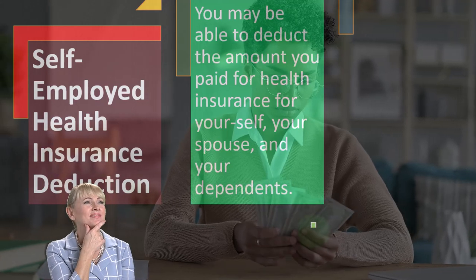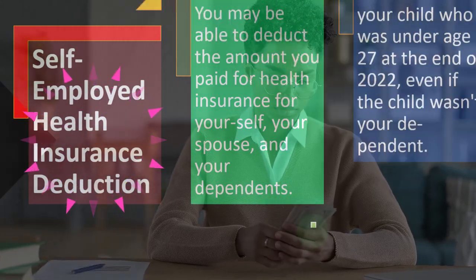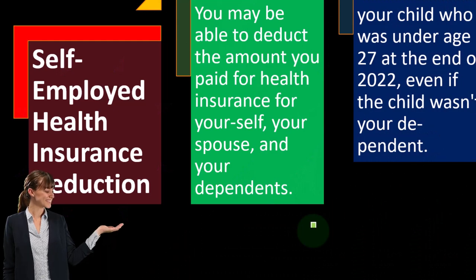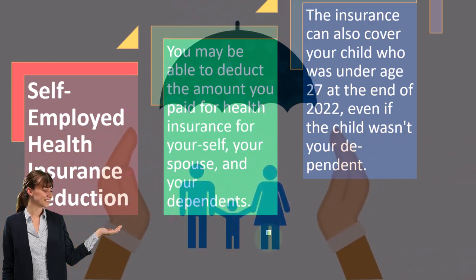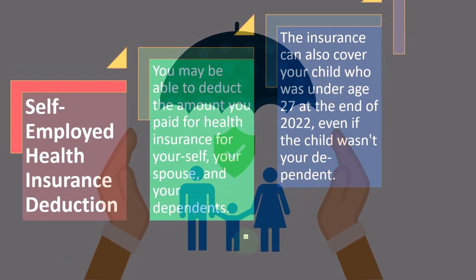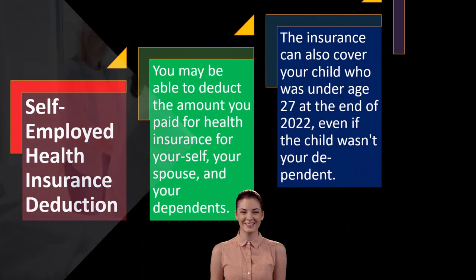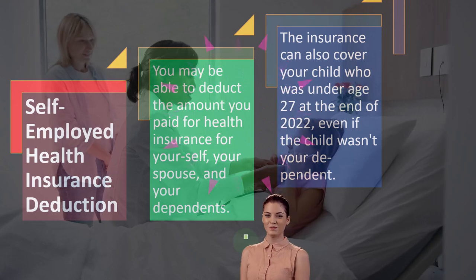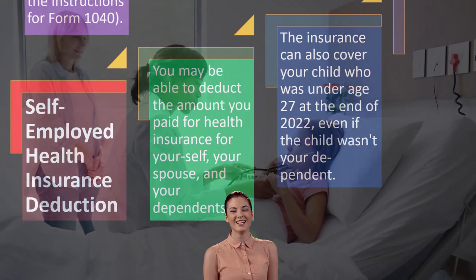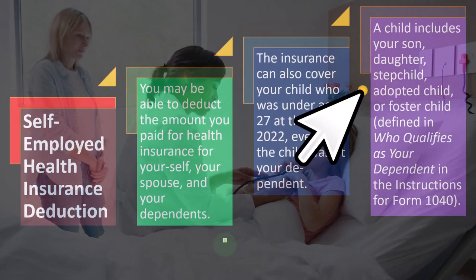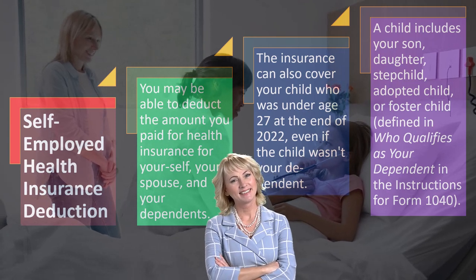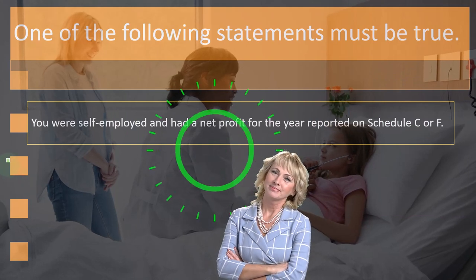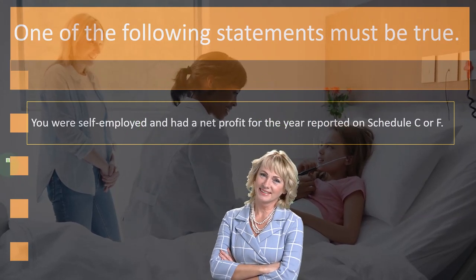You may be able to deduct the amount you paid for health insurance for yourself, your spouse, and your dependents. The insurance can also cover your child who was under age 27 at the end of 2022, even if the child wasn't your dependent. A child includes your son, daughter, stepchild, adopted child, or foster child as defined in the instructions for Form 1040.